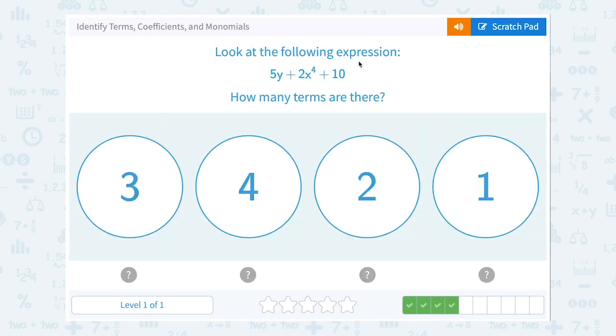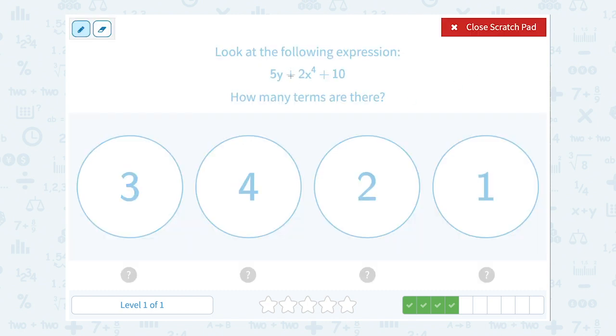Look at the following expression, how many terms are there? Well, the hint is that those terms are separated by plus and minus signs. So I've got one term here, 5y, another term here, 2x to the fourth, and then I have a third term here. So there's one, two, three terms.